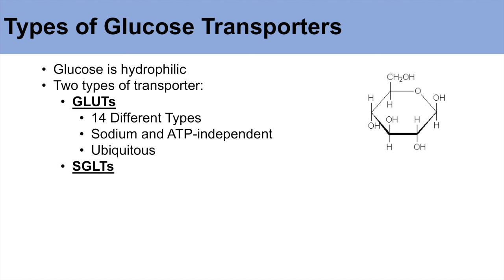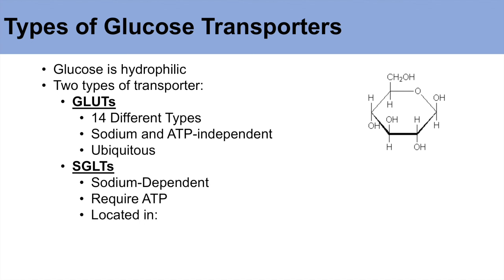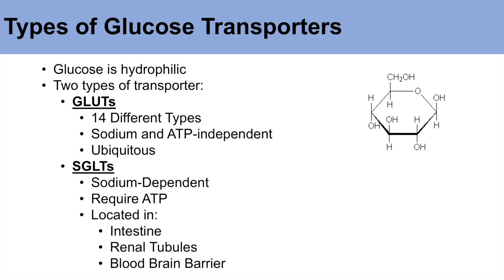The other type are known as the sodium-dependent glucose transporters, or the SGLTs. As their name suggests, they are sodium-dependent and they require ATP, because ATP is used to form a sodium gradient that transports glucose into the cell. They're located in a few different places in the body, particularly the intestine, renal tubules, and the blood-brain barrier.